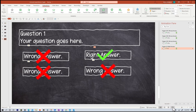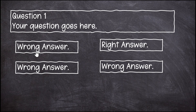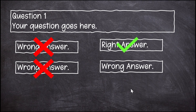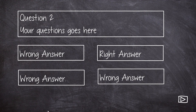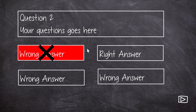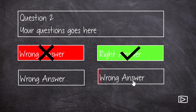Now let's take a look and see if this works. Wrong answer — very good. Wrong answer — very good. Right answer — perfect. Another variation would be something like this: when you click on a wrong answer, it not only tells you it's wrong, but it also changes the color. Same as the case with the right answer. So let's go ahead and take a look at how this is done.